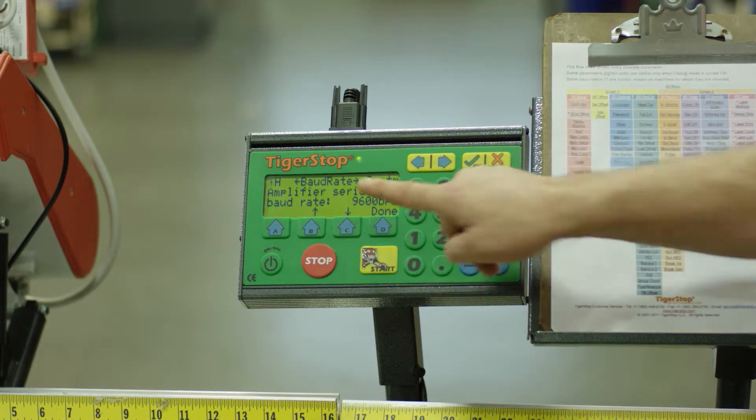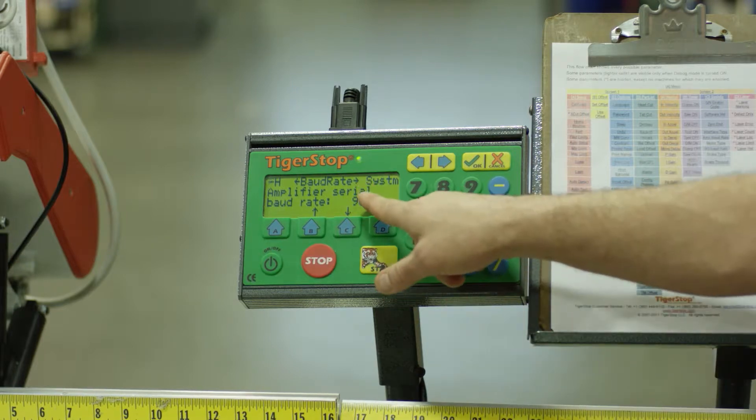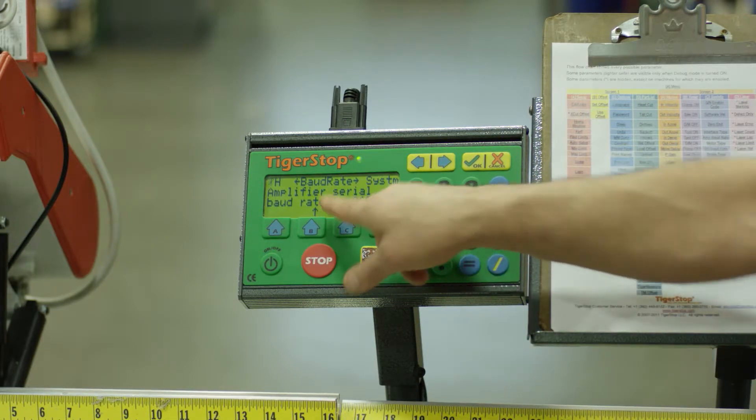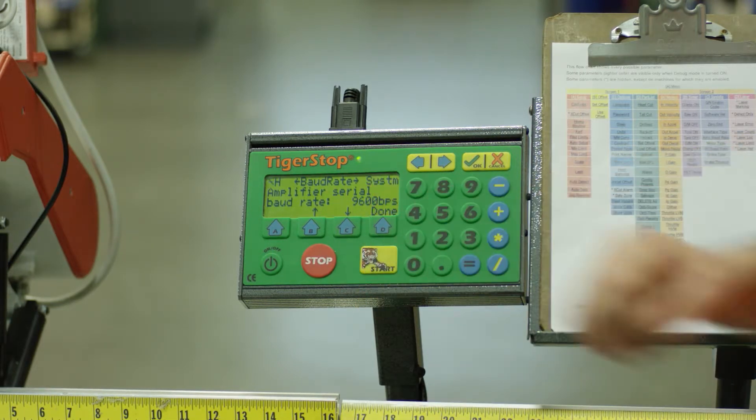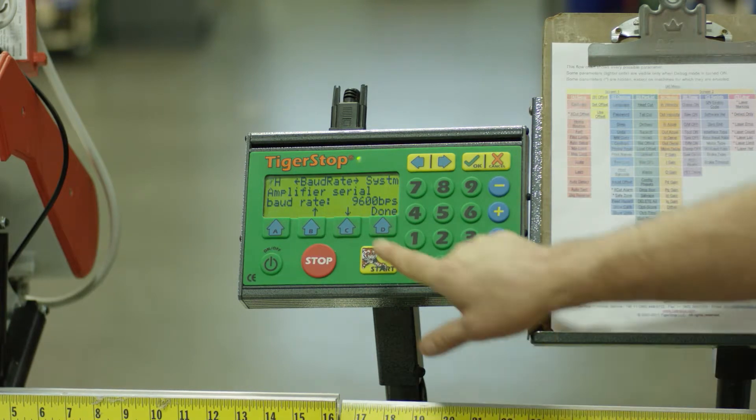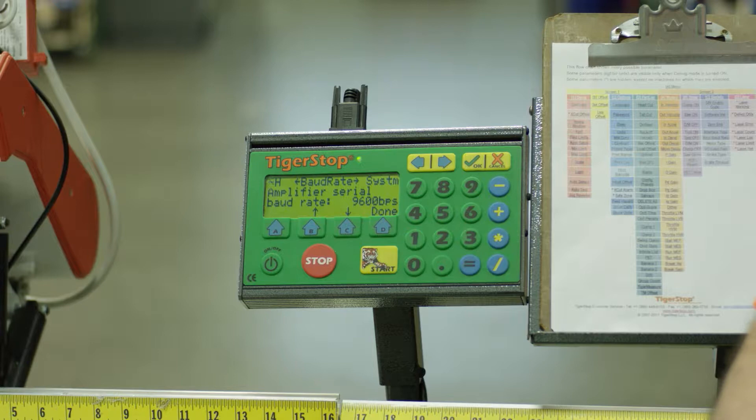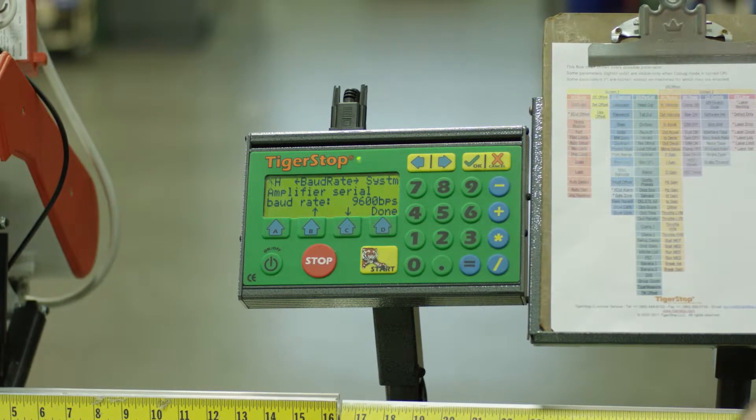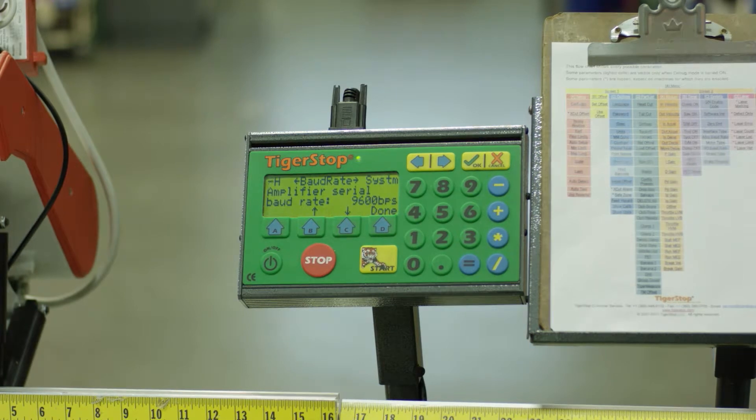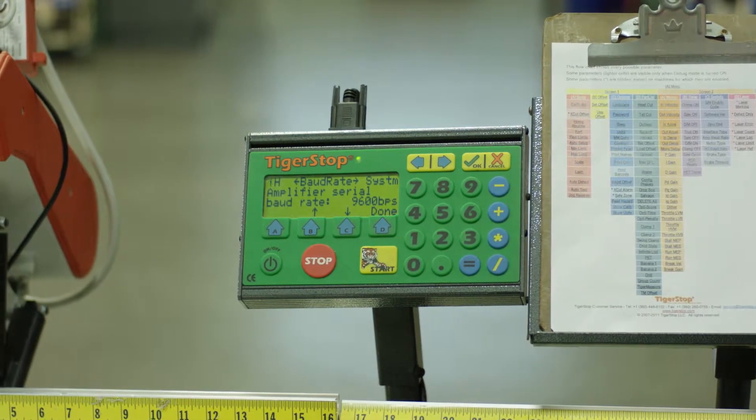You'll see my baud rate now is listed. It is telling me that the amplifier and serial setup is 9600 bits per second. For some of you, this may need to be changed if you're adding the tablet package, a barcode scanner, you're putting it on your network where you're going to download direct.